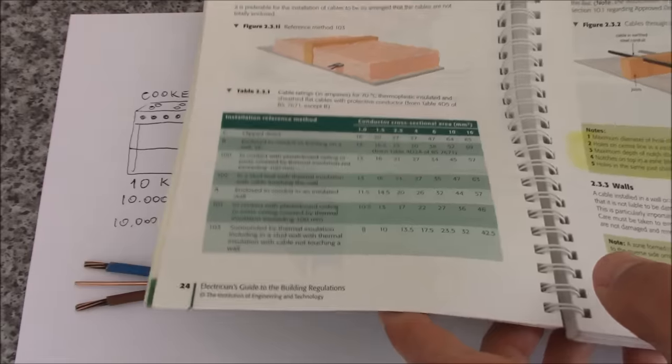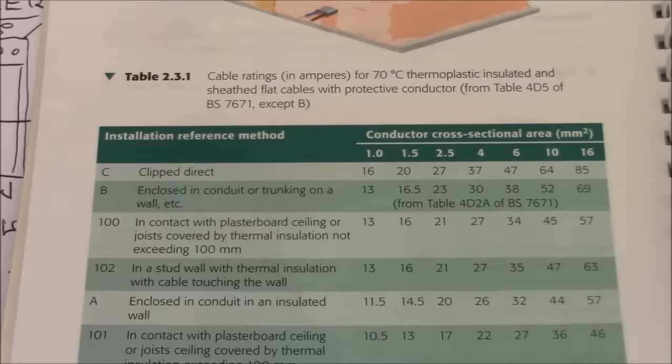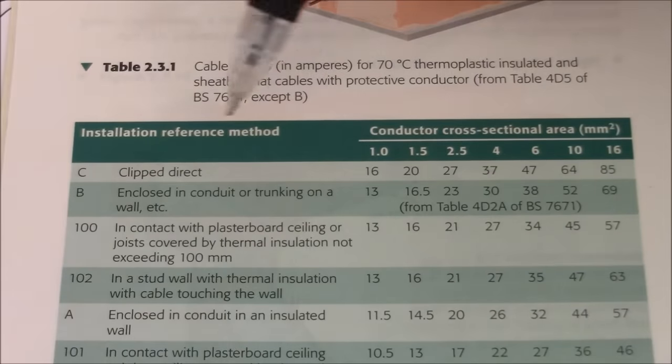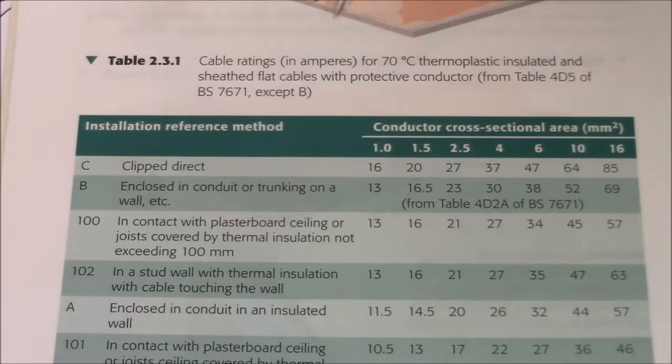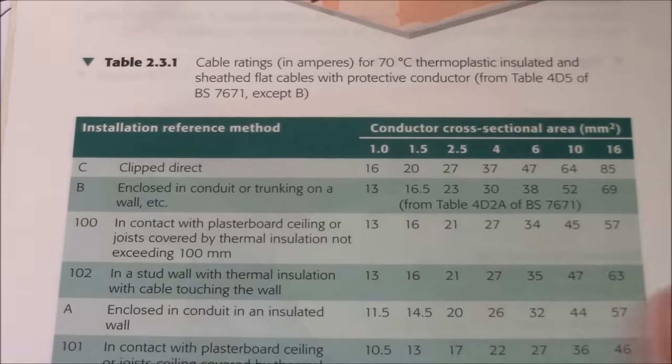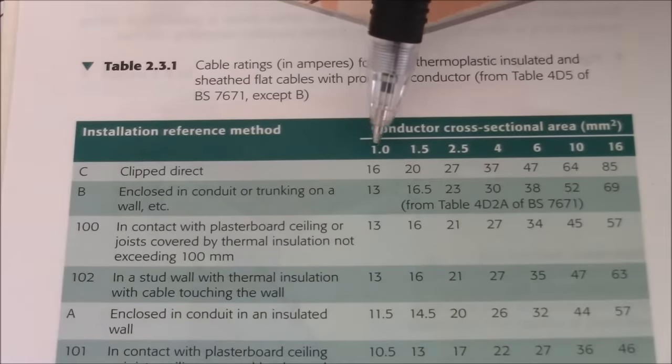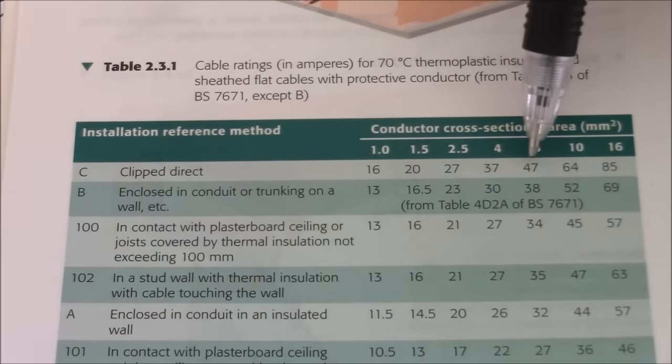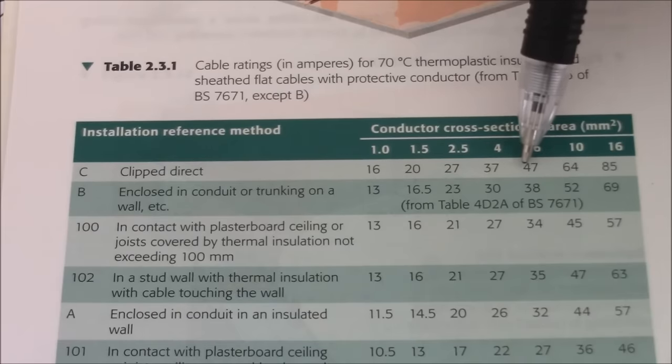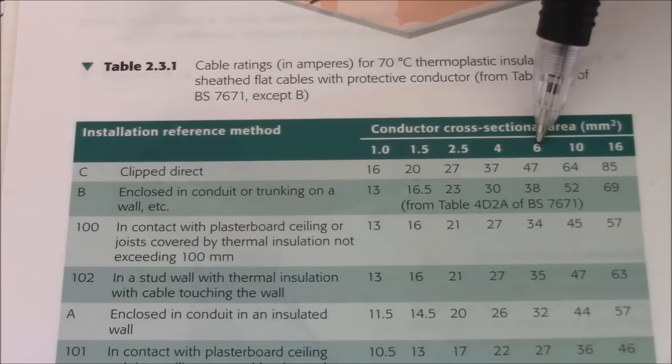So we know how we install it. Let's say we clip it direct to the wall. If we say that this has to be equal or bigger than 45 amps, let's have a look at the first column. 47 amps, bigger than 45. So that's the size of the cable, 6 mm.